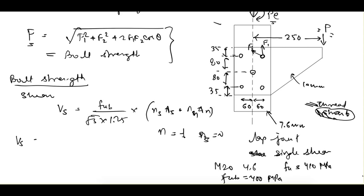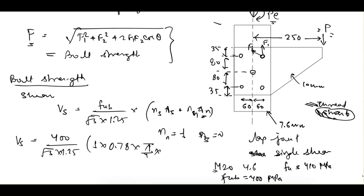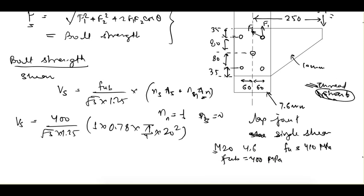Putting in these values: VS = (400 / (√3 × 1.25)) × (0.75 × 1 × An), where An (net thread area) = 0.78 × (π/4) × D². With M20 bolt, D = 20 mm. From this equation, VS = 45.272 kN — that is the shear strength for a single bolt.